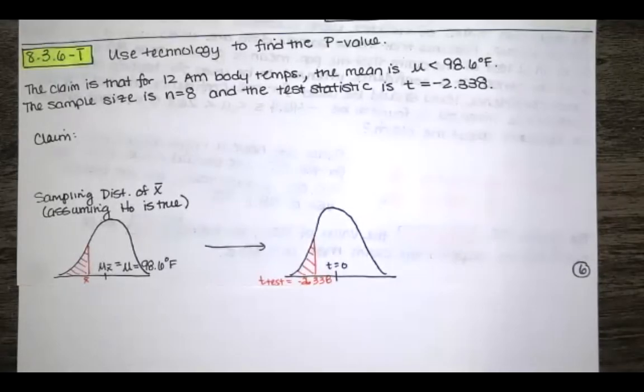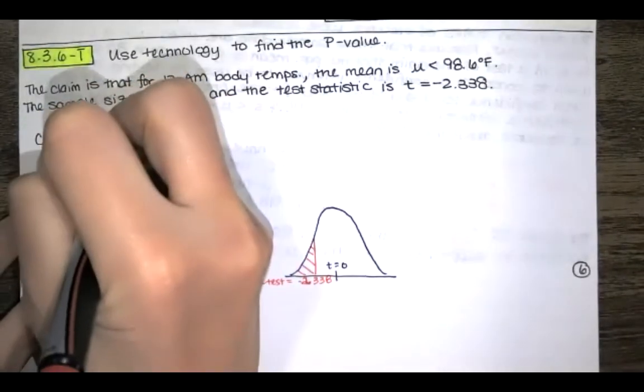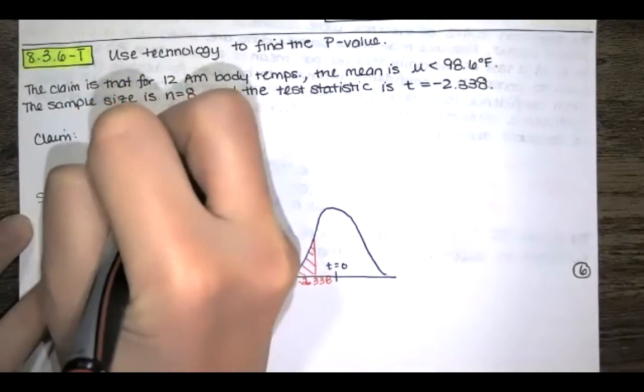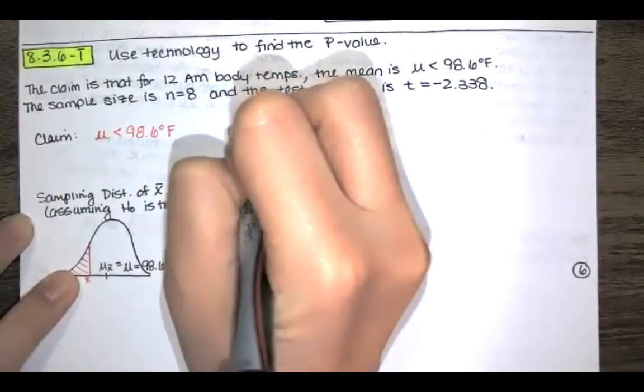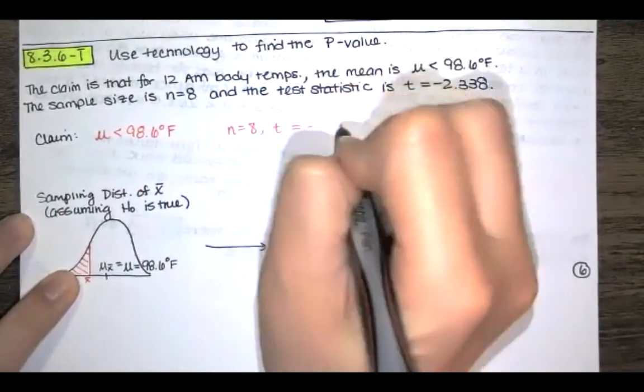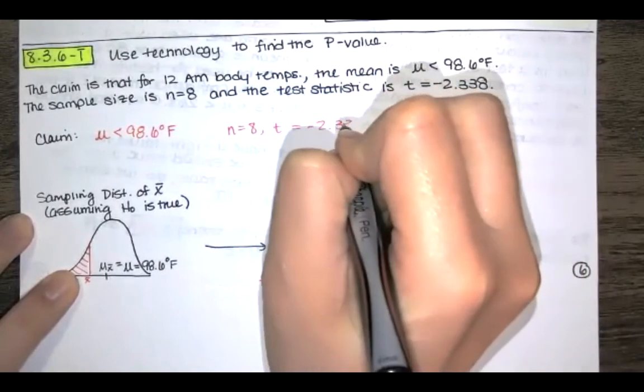In this video, we solve problem 8.3.6-T. We're asked to use technology to find a p-value. We're told that the claim is that for 12 a.m. body temperatures, the mean is less than 98.6 degrees Fahrenheit. I'll write down that claim. The sample size is n equals 8, and the test statistic T is equal to negative 2.338.